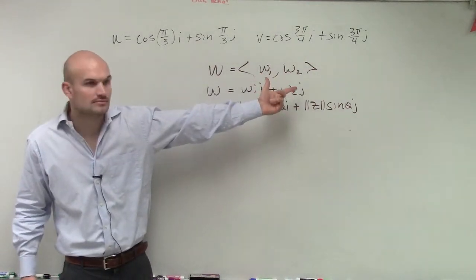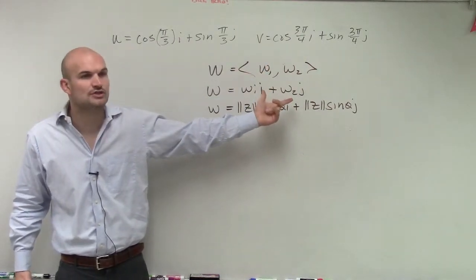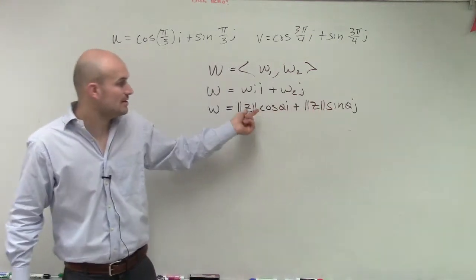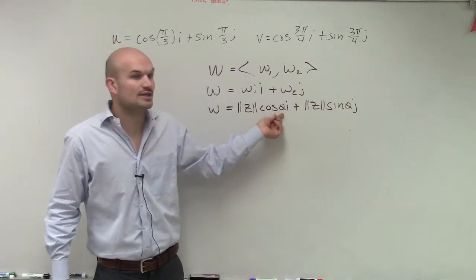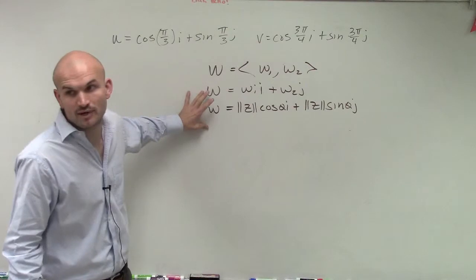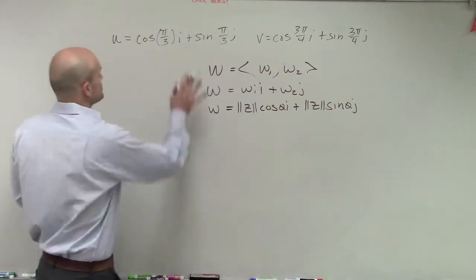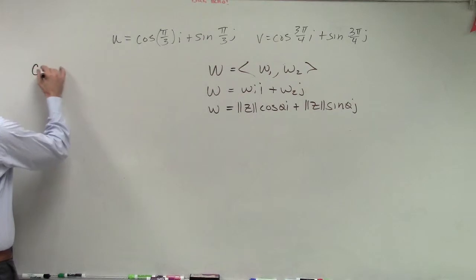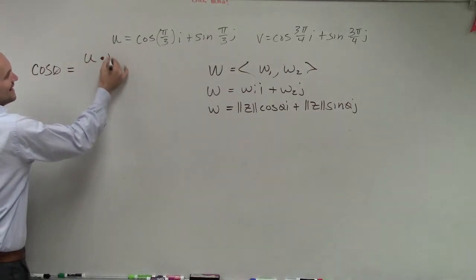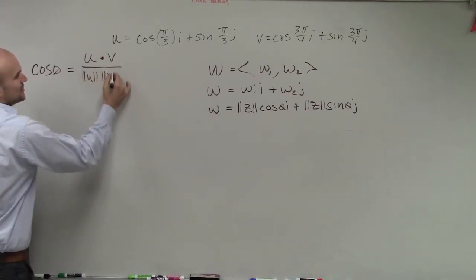Here's just your component form — looks very much like a coordinate point but it creates a vector. Here it's written as a linear combination of your two unit vectors i and j. And here it's written as your unit vector multiplied by a magnitude, dealing with your two angles using cosine and sine. Now they're saying: find the angle between our two vectors u and v. The formula is: cosine of theta equals u dot v divided by the magnitude of u times the magnitude of v.